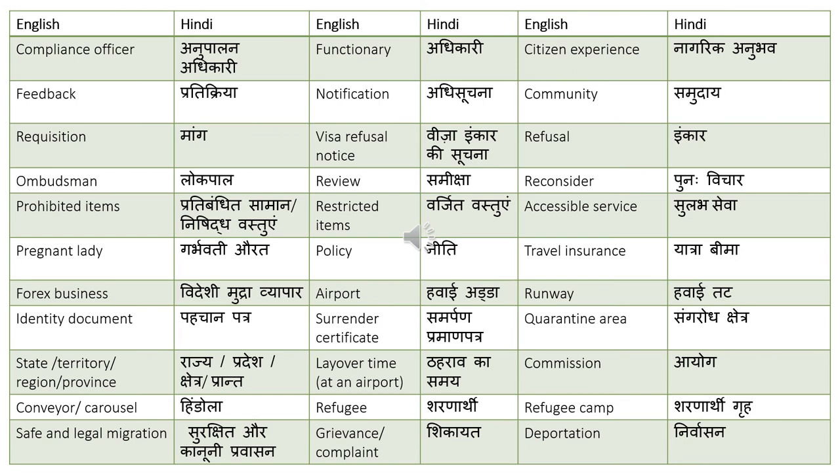Accessible Service — Sulabh Seva. Travel Insurance — Yatra Bhima. Runway — Hawaipati. Quarantine Area — Sangrodh Kshetra. Commission — Ayog. Refugee Camp — Sharanarthi Shivir. Deportation — Nirvasan.